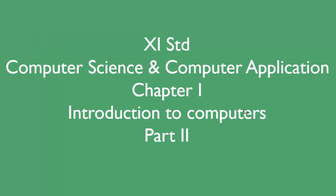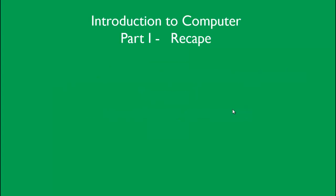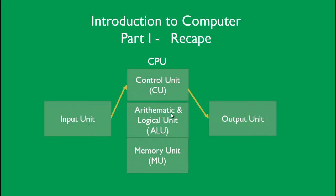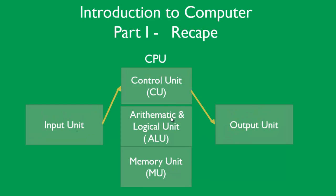Today we are going to see Introduction to Computers Part 2. We have already seen Part 1, so before moving to the lesson, we should recap our last class. In the last class, we discussed the functional units of computers: input units get instructions from the user, the control unit passes the instructions to the CPU, and the CPU does all the calculations and sends the output to the output unit. This is the simple working principle of computers.